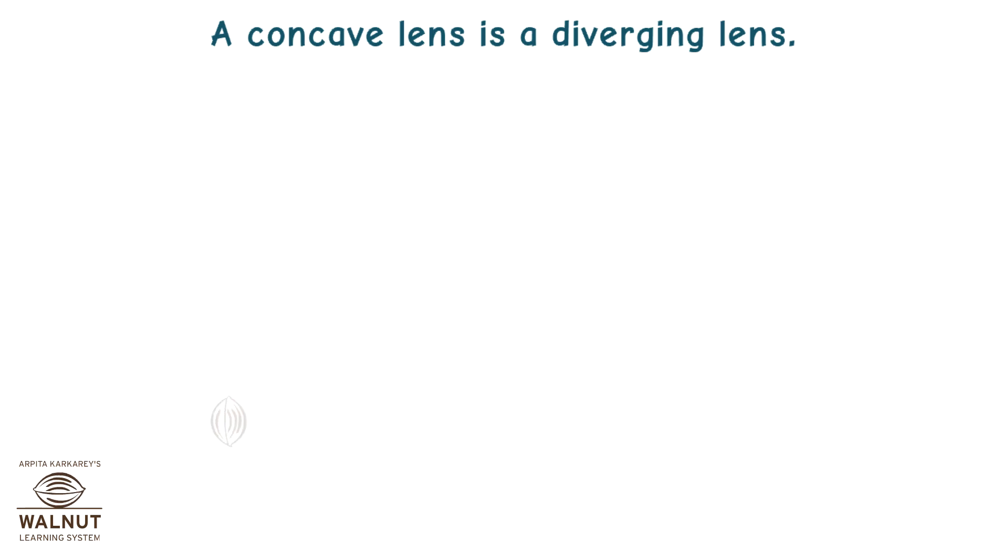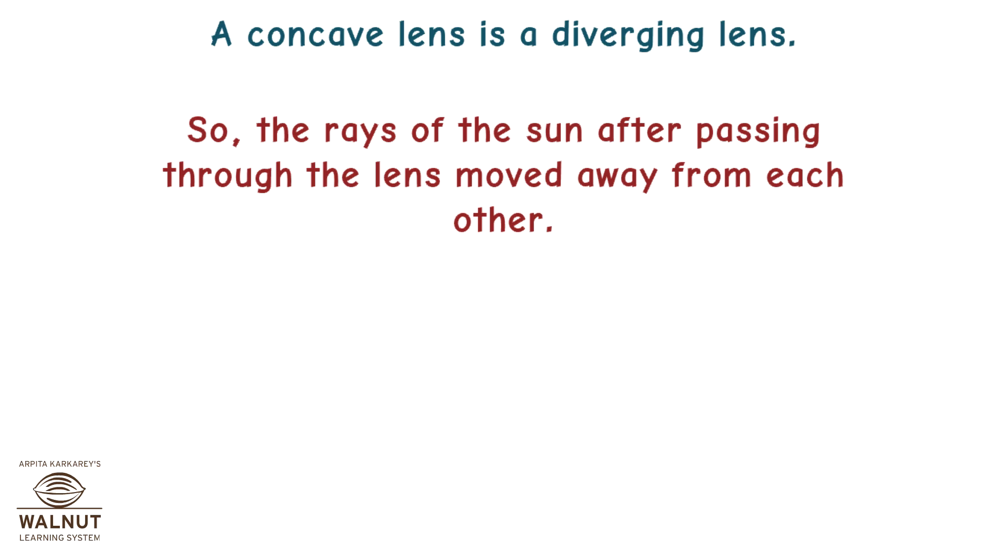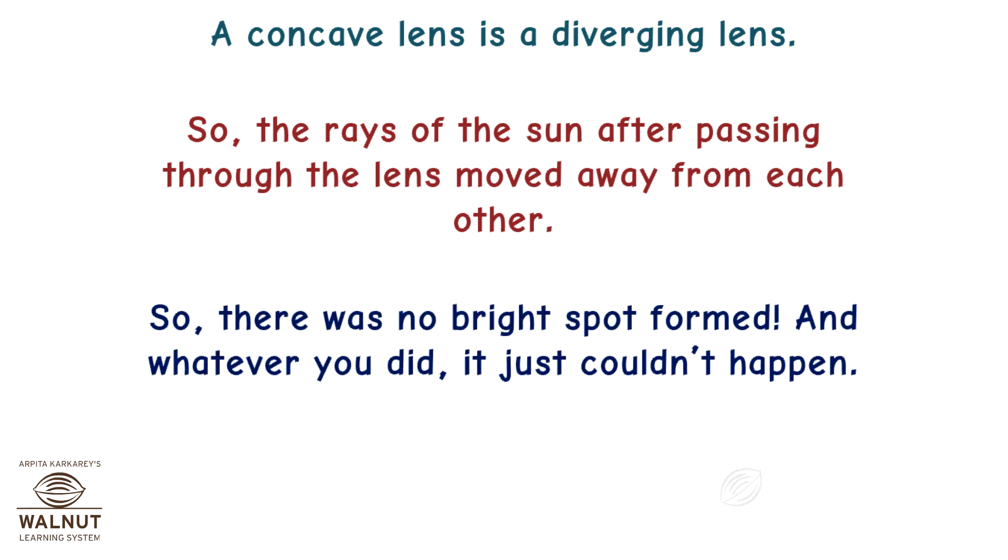A concave lens is a diverging lens. So the rays of the sun after passing through the lens moved away from each other. So there was no bright spot formed. And whatever you did, it just couldn't happen.